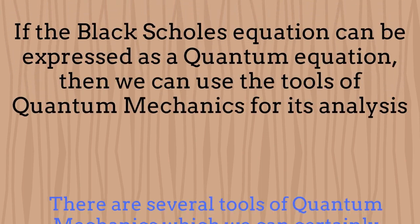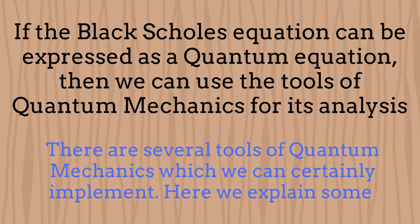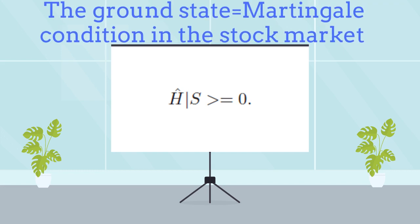If the Black-Scholes equation can be expressed as a Schrödinger equation, then we can certainly use the tools of quantum mechanics for analyzing its solutions, equilibrium conditions, and others. The equilibrium condition of the market, called the Martingale condition, is then equivalent to the ground state or vacuum of the system from the perspective of quantum mechanics.